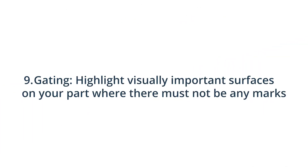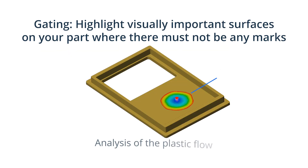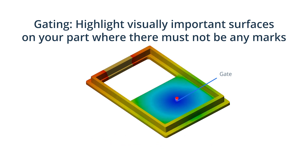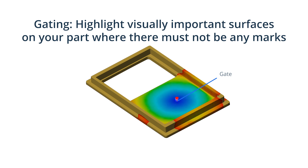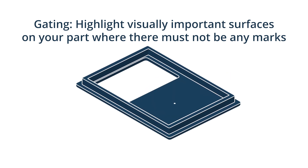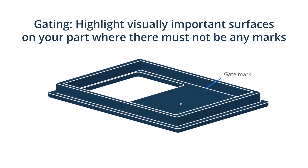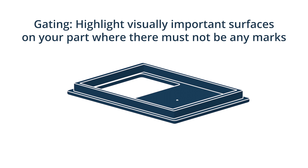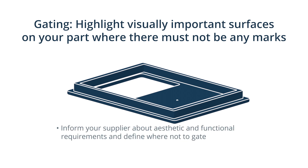Final tip: Highlight visually important surfaces on your part where there must not be any marks. It is important for the manufacturer to understand from the outset what your requirements are in terms of appearance. A key point for the toolmaker to consider is the gate location — gates are entry sections through which the molten material enters the mold. The toolmaker must choose the type of gate and position them strategically to minimize potential quality issues. Gates also leave a gate vestige, a visual indication that the part was gated, even if subtle. We recommend letting your supplier know about any aesthetic and functional requirements and defining where not to gate.